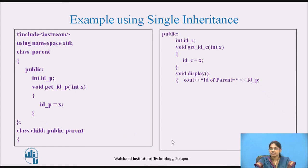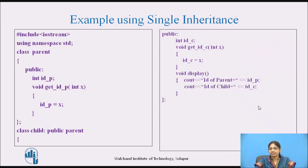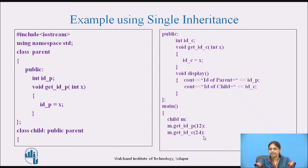There is one more member function 'display' in the child class, which displays the id of the parent — meaning the derived class is accessing members of the base class — and also displays the id of the child. In the main function, we declare an object for the child class. Using the object and dot operator, we call get_idp which assigns 12 to idp, and get_idc which assigns 24 to idc. Then we call display to show both values.